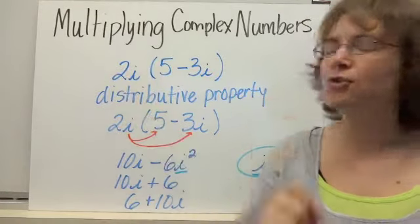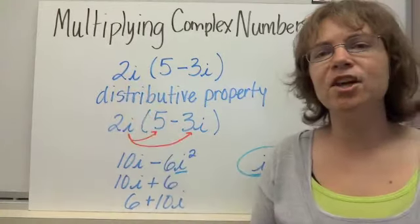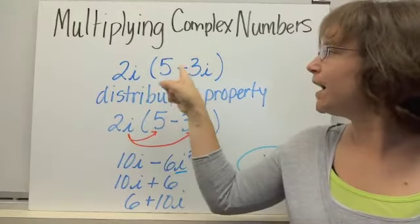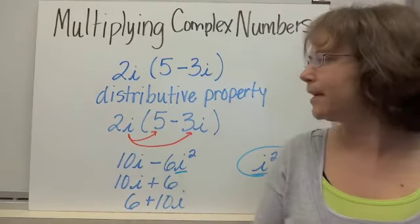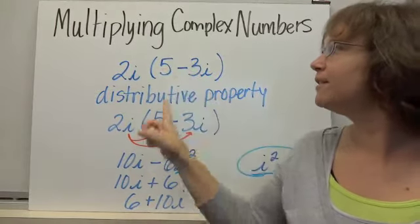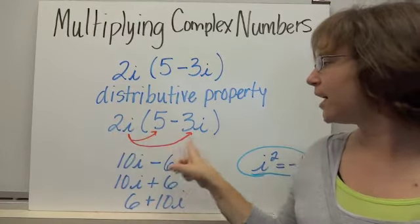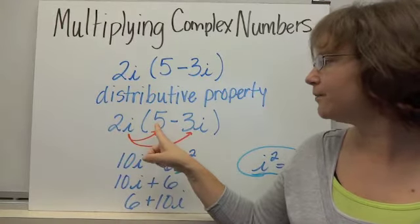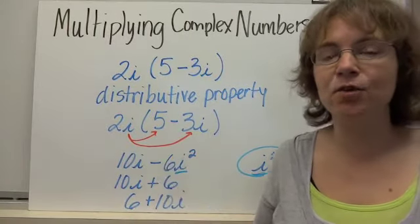Let's do a few examples first. If we have two complex numbers — 2i, which is a complex number because we could write it as 0 plus 2i, times 5 minus 3i — we're going to use the distributive property. We're going to take this 2i and give it to both parts of this complex number: 2i times 5 and 2i times negative 3i.